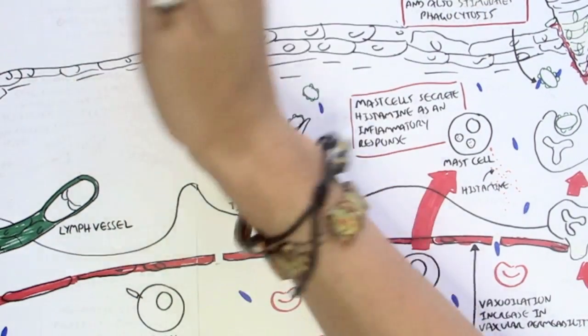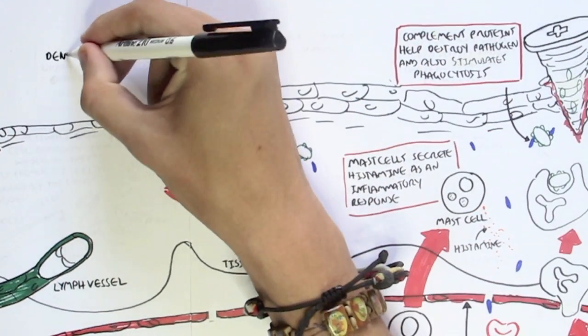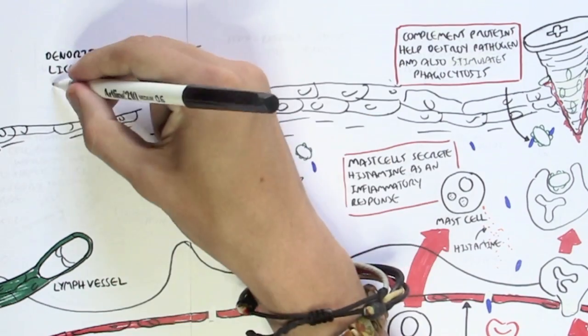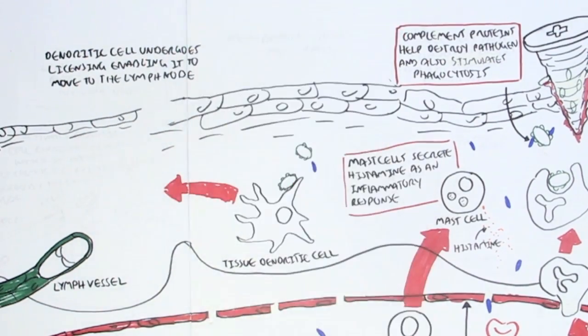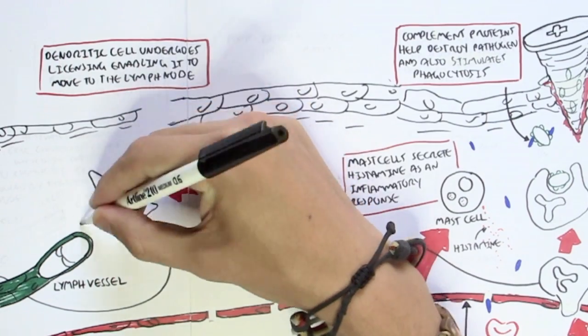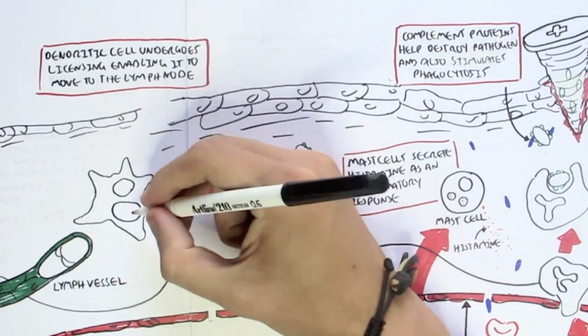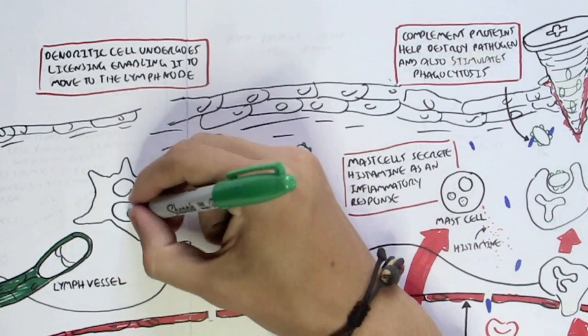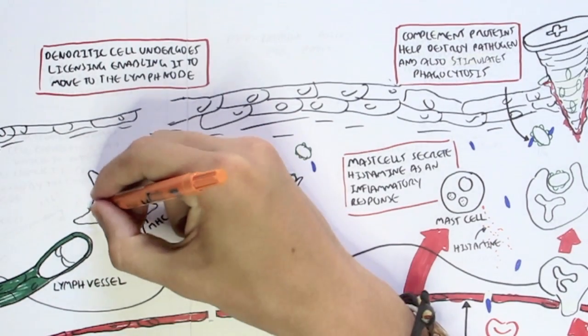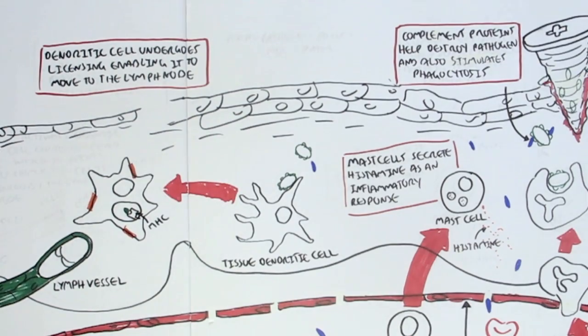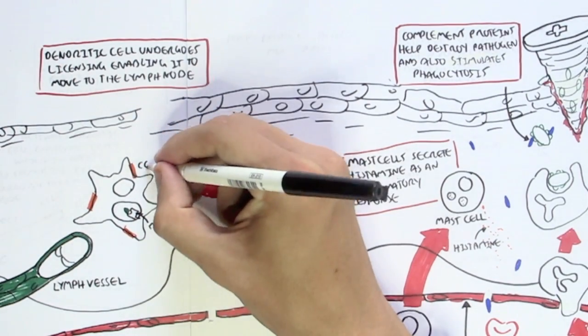And so the tissue dendritic cell, when it recognizes a pathogen, will become activated. And when the dendritic cell is activated, it will undergo what's called licensing, enabling it to move into the lymph nodes, to migrate into the lymph nodes. So the dendritic cell will phagocytize the pathogen and express the pathogen on an MHC molecule, begin processing it to express it on an MHC molecule. And then once it does this, it will undergo licensing, where the dendritic cells begin expressing certain proteins on the cell surface, for example, CCR7 here in orange.